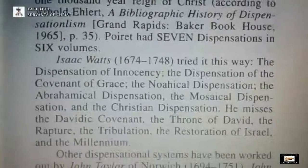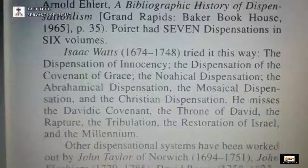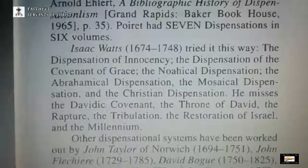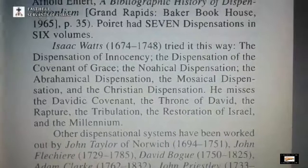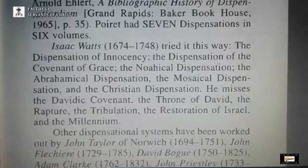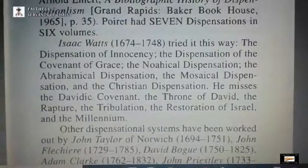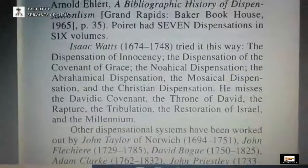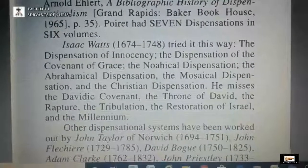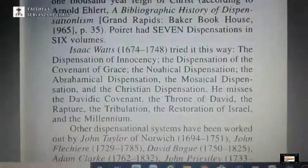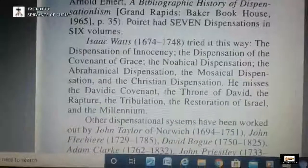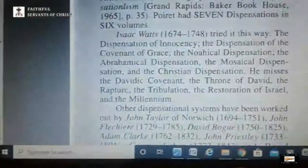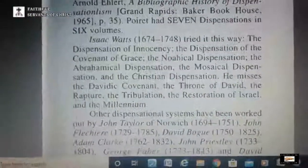Isaac Watts, 1674 to 1748, taught a dispensation of innocency, dispensation of the covenant of grace, the Noahic dispensation, the Abrahamic dispensation, the Mosaic dispensation, and the Christian dispensation. He also misses the Davidic covenant, the Throne of David, the Rapture, the Tribulation — also called the Time of Jacob's Trouble — and the Restoration of Israel in the Millennium. But he was teaching a form, a heretical form obviously, but he was teaching different dispensations.